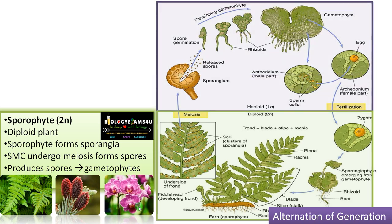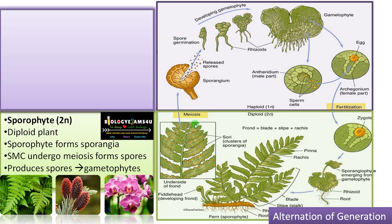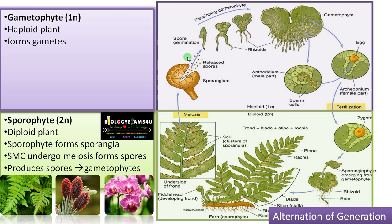Now let us see the gametophytic phase. The gametophytic phase, being produced from spores which are haploid, means the gametophyte is a haploid plant. It forms gametes. These spores are produced inside the sporangium, released, and finally form the gametophyte. The gametophyte of ferns is called the prothallus. The gametophyte produces sex organs, so it is haploid, and therefore gametes are also haploid — meaning mitosis produces the gametes.